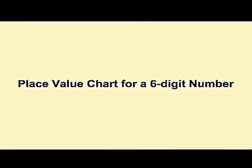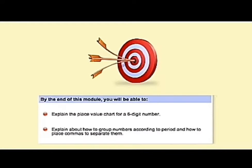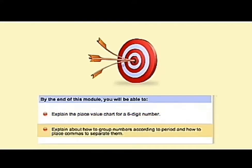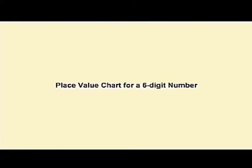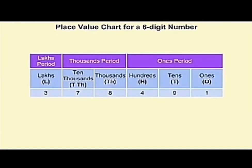Place value chart for a six-digit number. By the end of this module, you will be able to explain the place value chart for a six-digit number, explain how to group numbers according to period, and how to place commas to separate them. Let us learn how to represent the place value chart for a six-digit number and about the uses of commas between the numbers.